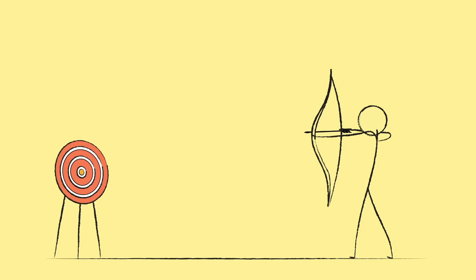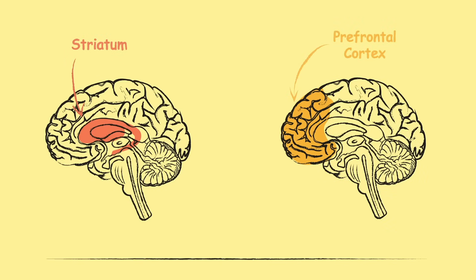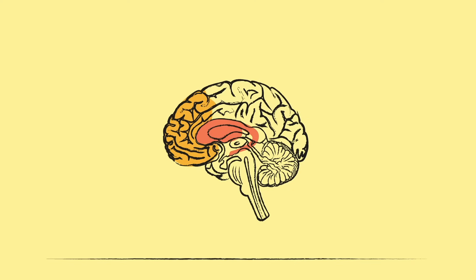So our teenage years are a great time to make mistakes and learn from them. As we learn, the connections between different areas of our brains strengthen. Our striatum and prefrontal cortex talk to each other better and work together to tackle problems as a team.